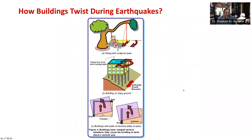Considering the rope swing analogy again: if the two ropes with which the cradle is tied to the branch of the tree are different in length, as shown in figure 4a, such a swing will also twist even if you sit in the middle. Similarly, in buildings with unequal vertical members — that is, columns and walls — the floor twists as shown in figure 4b. Buildings which have walls only on two sides or only on one side, with thin columns along the other sides as shown in figure 4c, also undergo twisting during ground shaking.